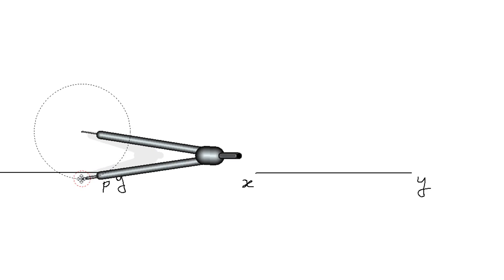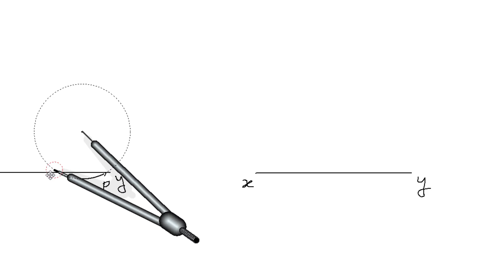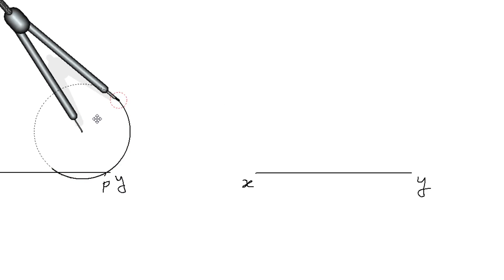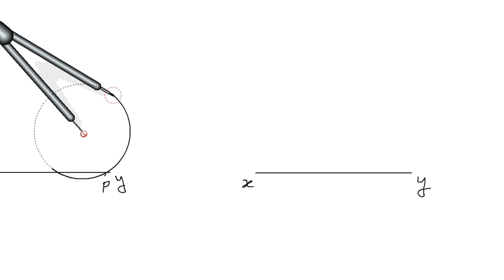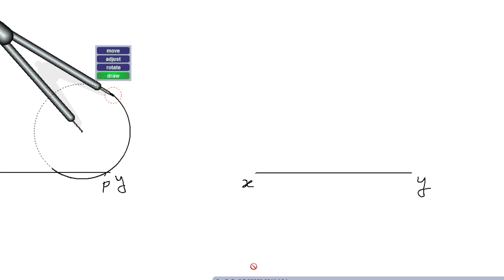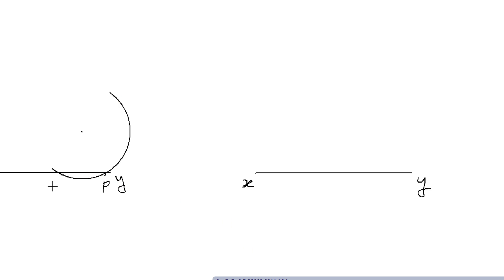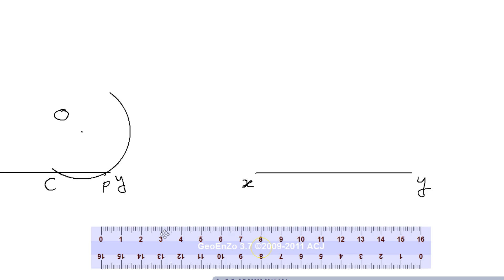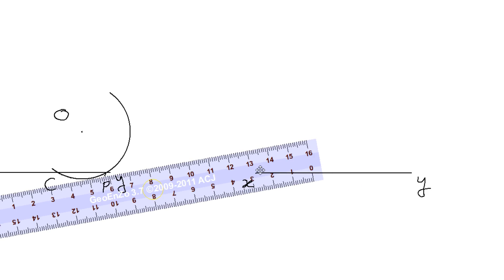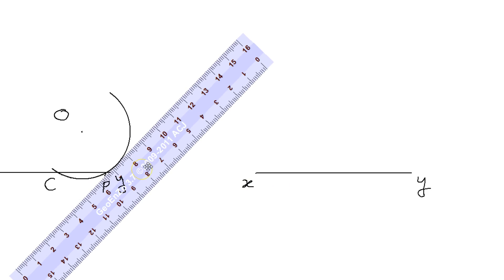Now draw an arc or semicircle — it should be more than a semicircle. Draw it like that. Now you see this semicircle has cut the line XY. Let us say it has cut the line XY at point C.